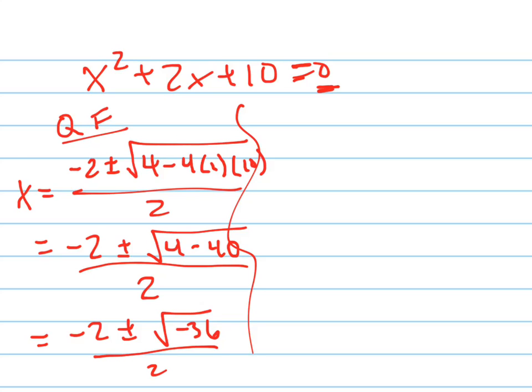Which means -2 plus or minus the square root of -36 all over 2. And the square root of -36 is, I'm going to need some extra space here,